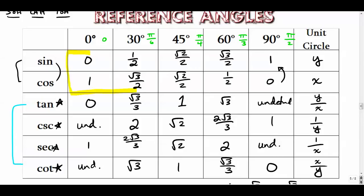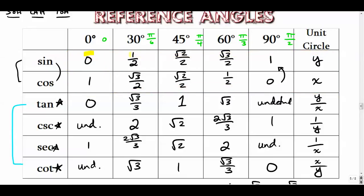If you do need to memorize, use the pattern: 0, 1, 2, 3, 4 under the radical for sine, and 4, 3, 2, 1, 0 for cosine, then derive the rest from there. Those were the trig function values at the five or six basic angles in our unit circle. In the next video we'll move into quadrants two, three, and four for sine, cosine, tangent, cosecant, secant, and cotangent of all those values.